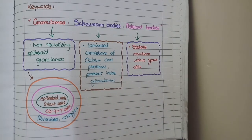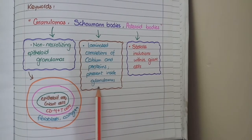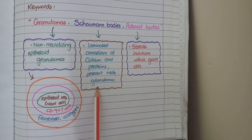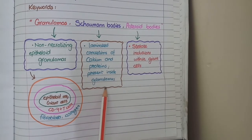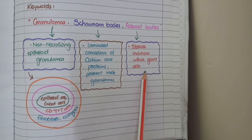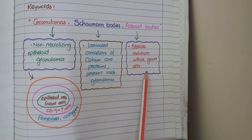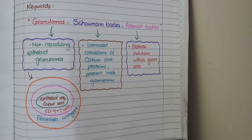Overall, on the microscopic picture of sarcoidosis, you see non-caseating granulomas, concretions of proteins and calcium known as Schaumann bodies, and asteroid bodies that are inclusion particles present in the giant cells.